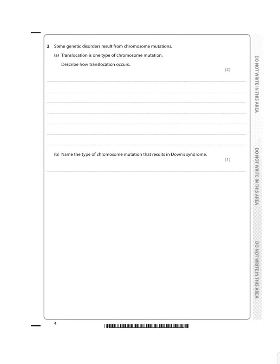Question 2. Some genetic disorders result from chromosome mutations. Translocation is one type of chromosome mutation. Describe how translocation occurs.